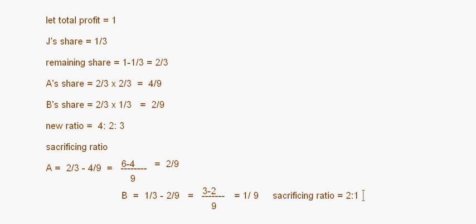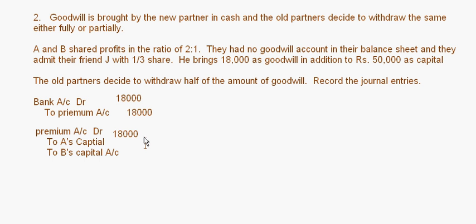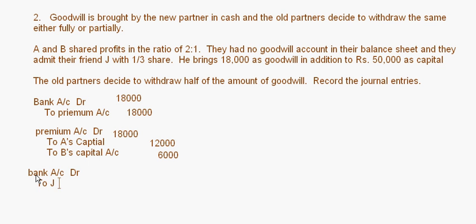The 18,000 has to be distributed in the sacrificing ratio of 2 is to 1. So 18,000 × 2/3 = 12,000 for A, and 18,000 × 1/3 = 6,000 for B. Then entry 3: bank account debit to J's account for 50,000 — this is for J's capital contribution.